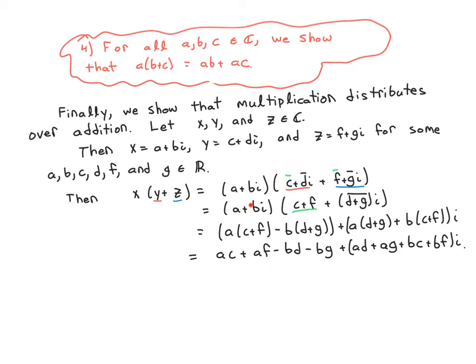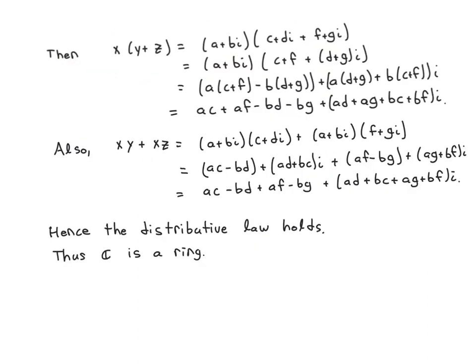Now we have the product of two complex numbers. Let's multiply them: the real part is A times (C plus F) minus B times (D plus G), because that's the first term minus the product of the last terms. The imaginary part is A times (D plus G) plus B times (C plus F), which is the sum of the outer and inner terms. Finally, let's distribute to simplify as much as possible. The real part becomes AC plus AF minus BD minus BG, and the imaginary part is AD plus AG plus BC plus BF.